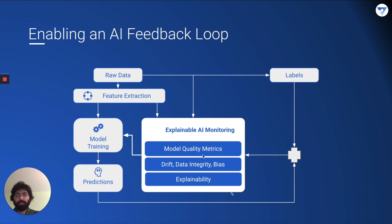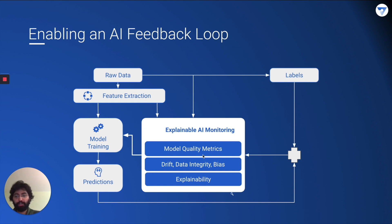So how does an AI feedback loop look? You have raw data, you extract features from that, and you train a model. The explainable AI monitoring box tells you how good your model is, how explainable it is, and gives you explanations to help assess the model. That informs whether the model needs to be retrained, whether different features are needed, or whether the model is even suitable for the task. You can also see the drift of incoming data and data integrity issues. In short: you create a model with data, monitor it, and keep retraining it until it achieves a suitable score on all metrics of interest.